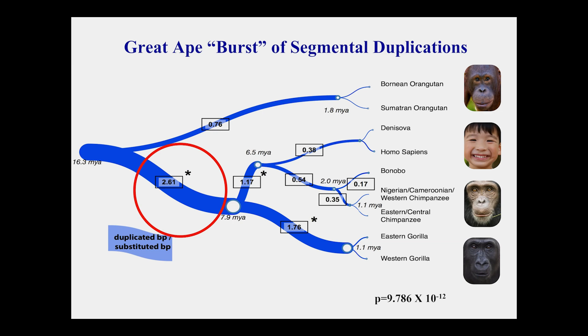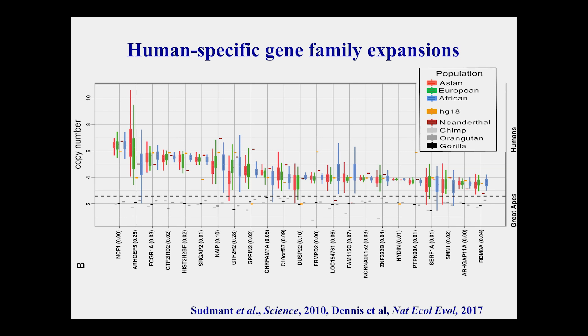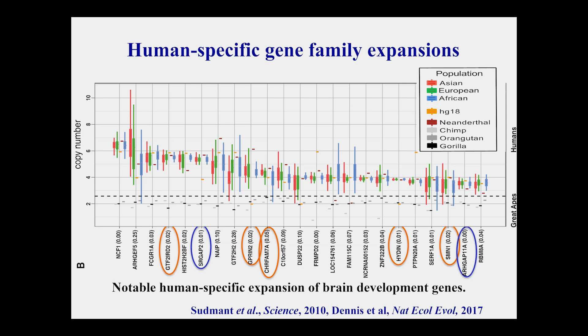What about human-specific genes? This subset shows copy number estimates across different human population groups, with gray indicating copy numbers seen in chimps, orangutans, and gorillas — two copies being consistent with an unduplicated diploid genome. What's notable is a significant enrichment of human-specific genes associated with the development of the human brain.